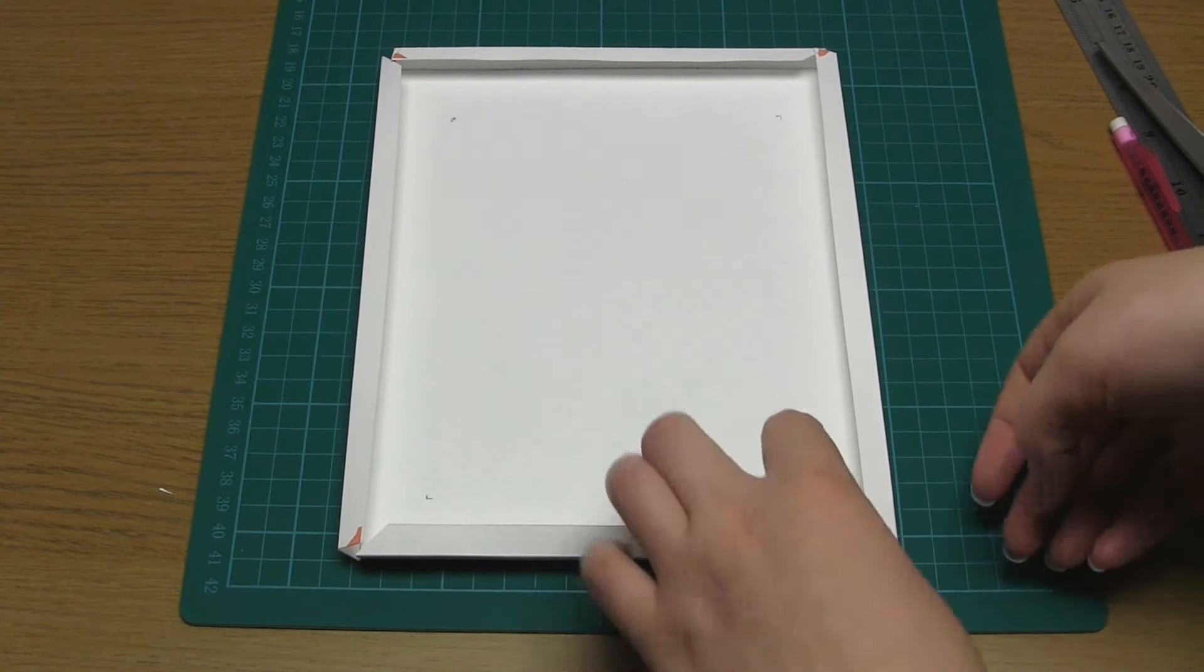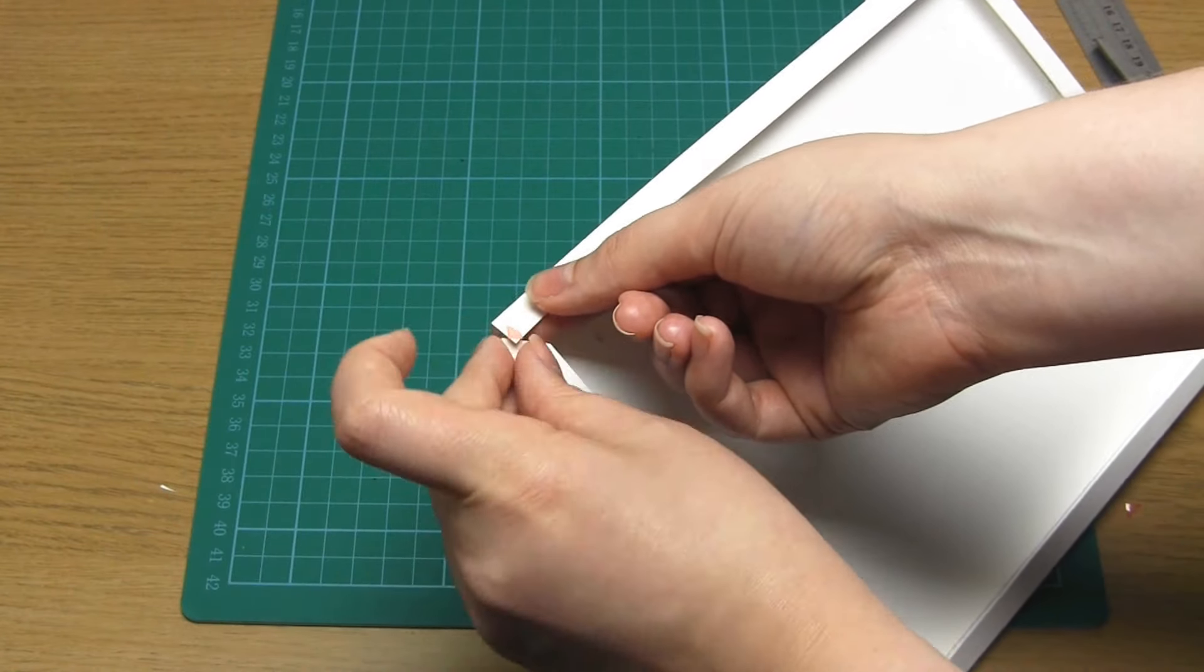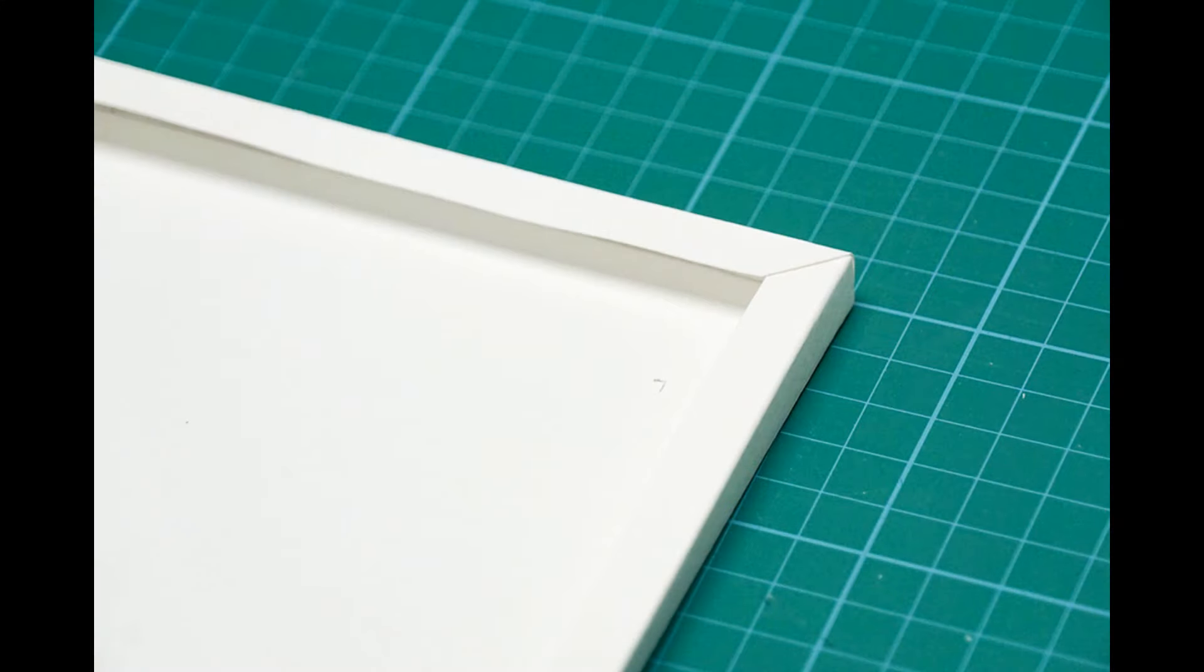Remove the protective film from the pieces of tape and then attach the corners together. Your corners should now have very neat diagonal joints.